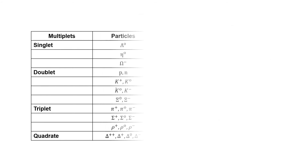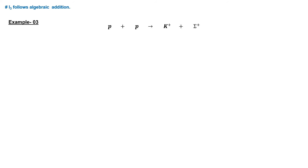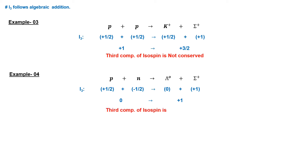For all hadron particles, the third component of isospin I3 is defined. The third component of isospin follows the algebraic addition rule. In the interaction of two protons decaying into a kaon and a sigma baryon, both the proton and kaon have I3 = +1/2, whereas the sigma has I3 = +1. Since the total I3 of the parent particles does not equal the total I3 of the daughter particles, the third component of isospin is not conserved in this reaction. In another example, a proton and neutron interact to produce a lambda and a sigma particle. The proton has I3 = +1/2 and the neutron has I3 = −1/2, while lambda-zero is a singlet with I3 = 0 and sigma-plus has I3 = +1. Again, the third component of isospin is not conserved.